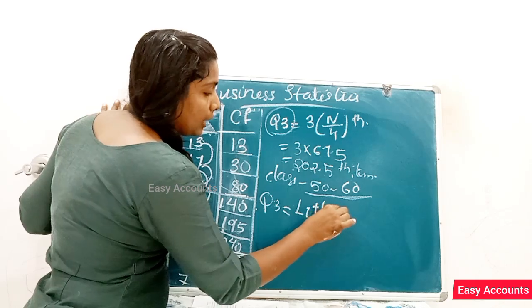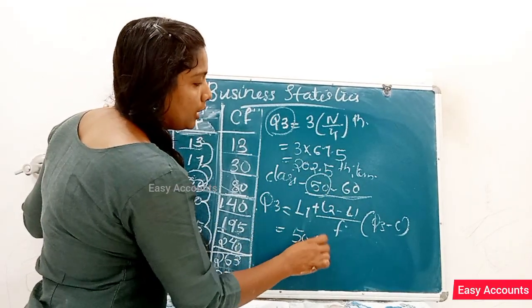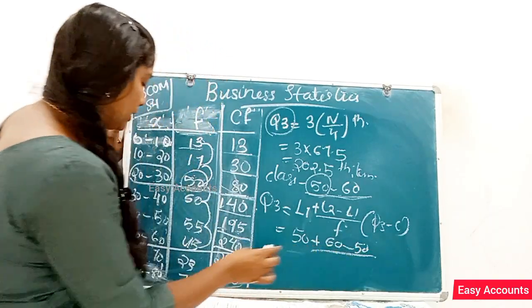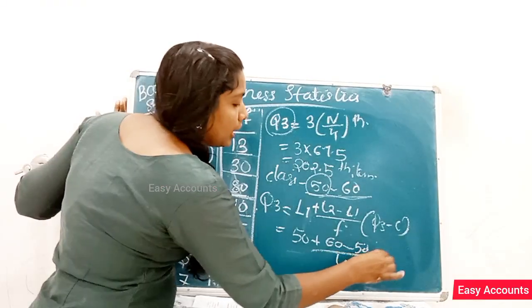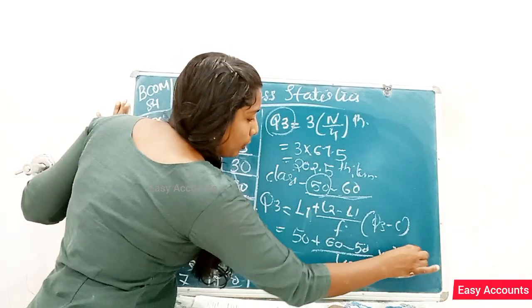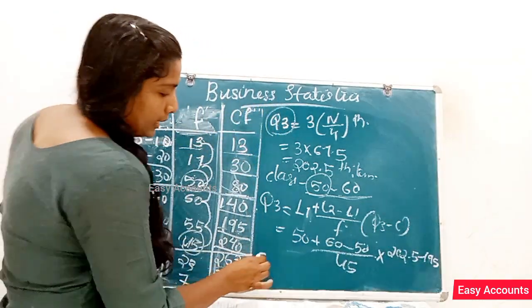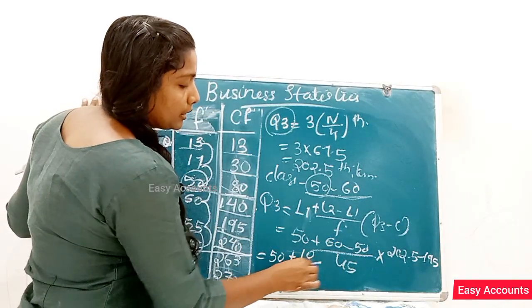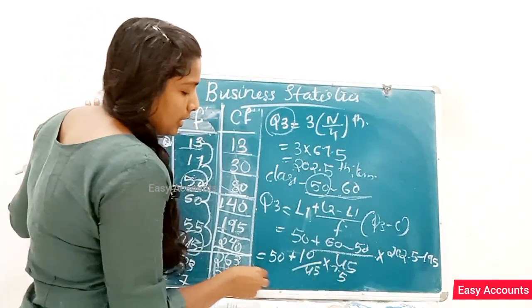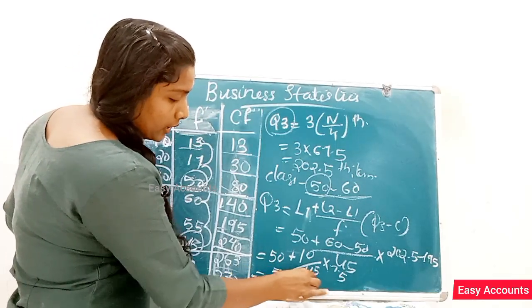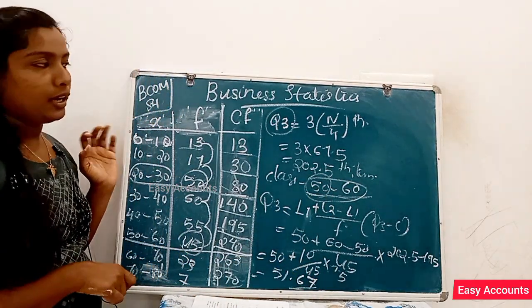For Q3: L plus (L2 minus L1) divided by F, into Q3 minus C. The lower limit L1 is 80, so: 80 plus (L2 minus L1) divided by F, into Q3 minus C. Then we have Q2.